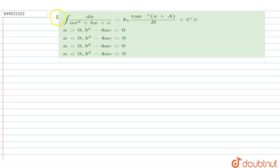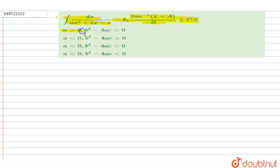Hello, welcome to Doubtnut. In this question, given the integration of dx upon ax² + bx + c is equal to k₁ into tan inverse of (x + A) upon B plus C. The conditions given are: a greater than 0, b² - 4ac greater than 0, or a less than 0, b² - 4ac greater than 0.